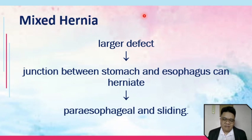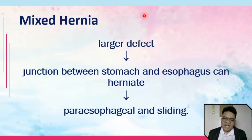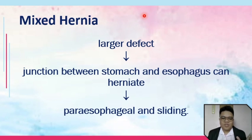You also have your mixed hernia, which is a larger defect that occurs if the junction between the stomach and esophagus herniates — it's a combination of paraesophageal and sliding hernia. Some references identify four types: Type 1 is sliding hernia; Types 2, 3, and 4 refer to paraesophageal hernia. Type 4 includes other abdominal contents such as the colon and spleen. The higher the type number, the more severe and the more organs are protruding through the diaphragm.